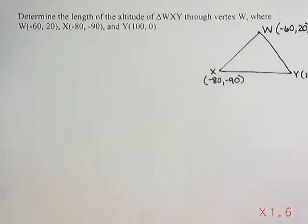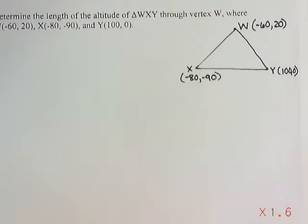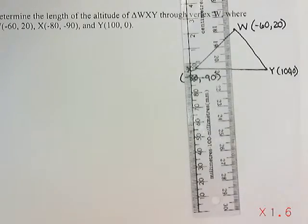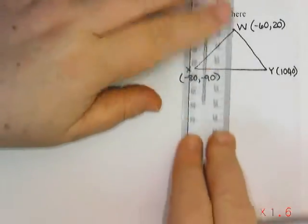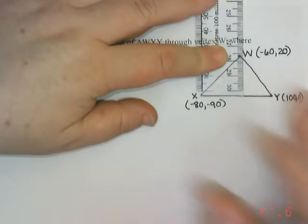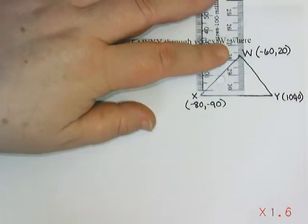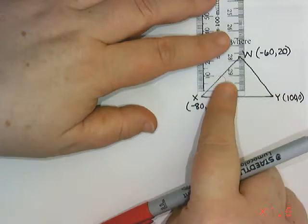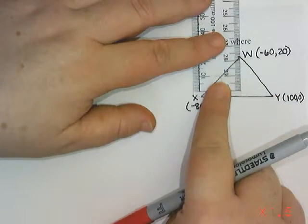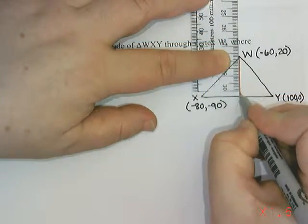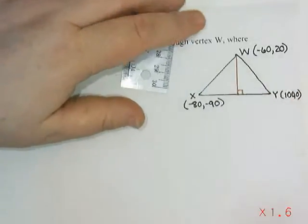Now an altitude is a line that is drawn from the corner that's specified straight down at a 90 degree angle to the opposite side. So if I wanted to do the altitude that passes through W, it needs to be 90 degree angles. So usually if I want to try to do a 90 degree angle and I don't have a protractor, what I might do is use the bottom of my ruler and try to line that up with the bottom of the triangle, and then just slide it over until it lines up with the point. So there's my altitude.